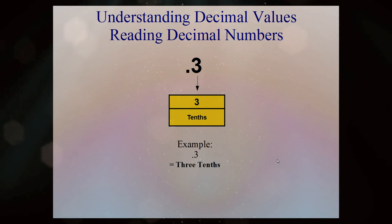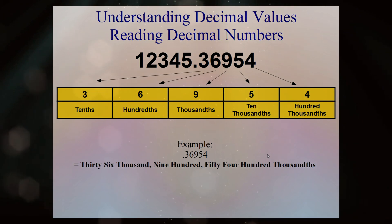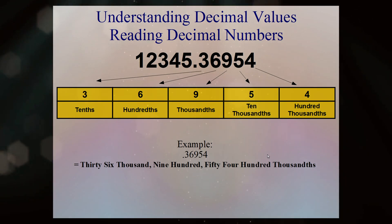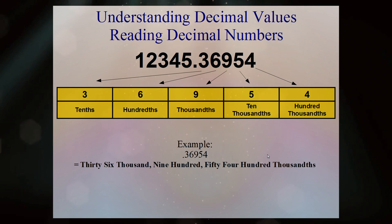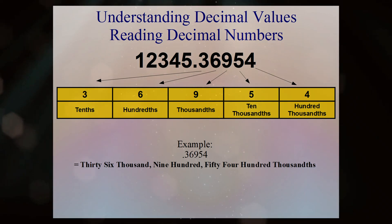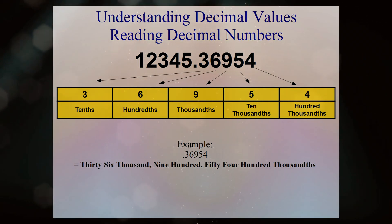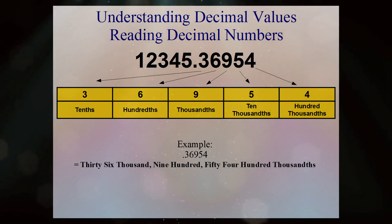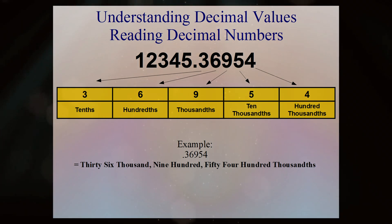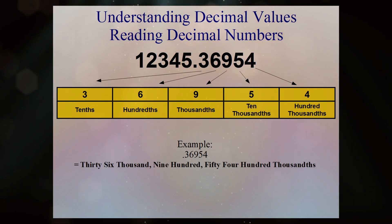I've brought our decimal number back and added a whole number to the beginning. The only rule you have to remember is when you see the decimal point, you say the word 'and.' So what would this number be? This would be twelve thousand three hundred forty-five and thirty-six thousand nine hundred and fifty-four hundred-thousandths.